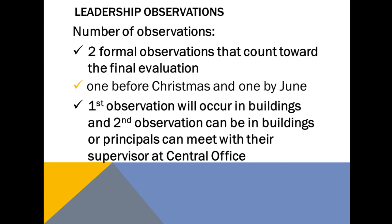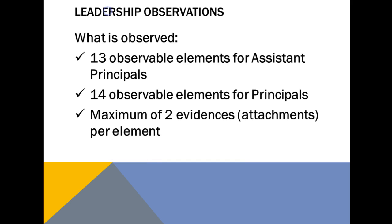For assistant principals, all meetings will happen in their building. This year there will be 13 observable elements for assistant principals and 14 observable elements for principals. There will be a maximum of two pieces of evidence, or attachments, per element.